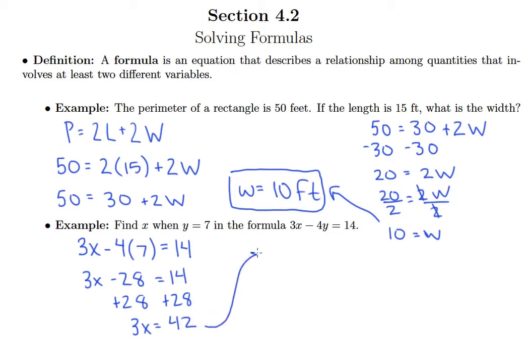3x divided by 3 is equal to 42 divided by 3. So x is equal to 42 divided by 3 which is 14.